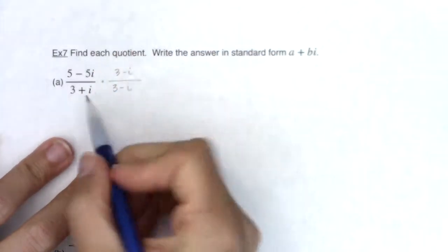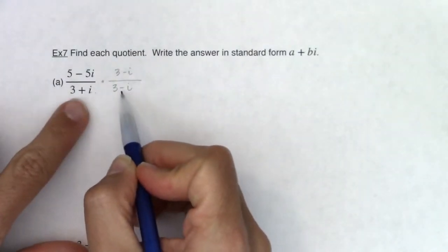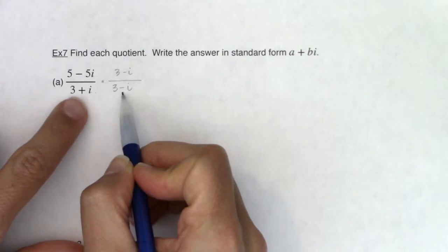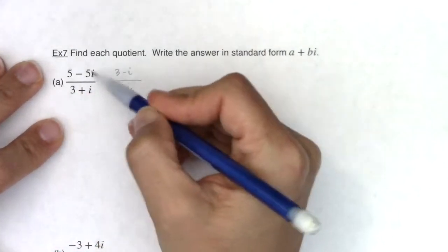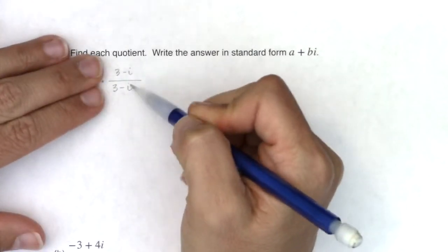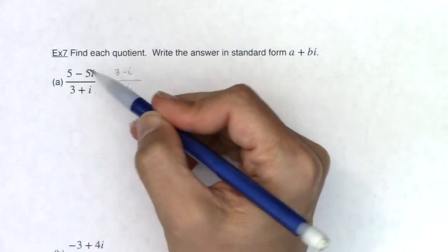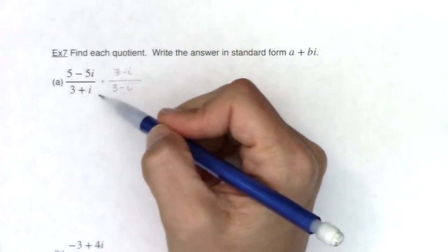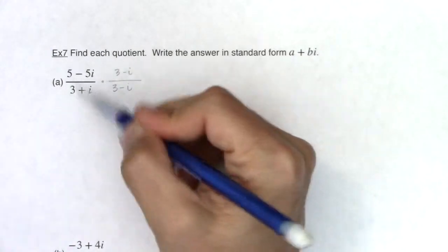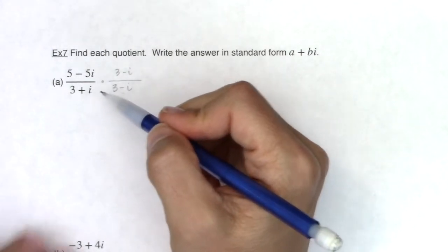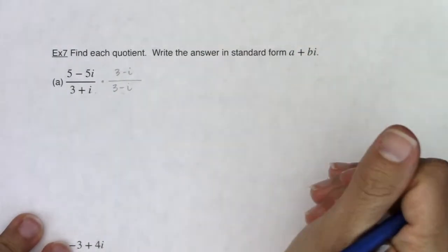The conjugate to 3 plus i is 3 minus i. The 3's are the same, the i's are the same, but the subtraction and addition signs are in contrast to one another. And if you look at what I'm multiplying this expression by, I'm multiplying it by 1. So 3 minus i in ratio to itself is 1, so I'm not changing my original problem. But by multiplying by this special version of 1, I'm going to be able to algebraically manipulate this expression and get it to the form a plus bi, where there's no i's in the denominator.